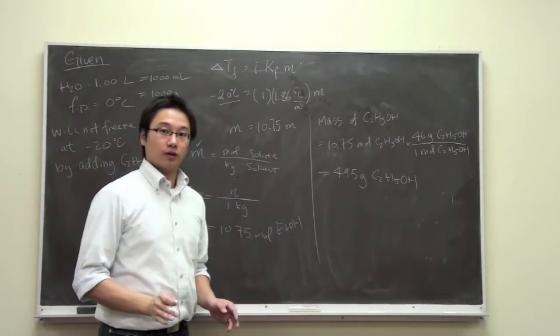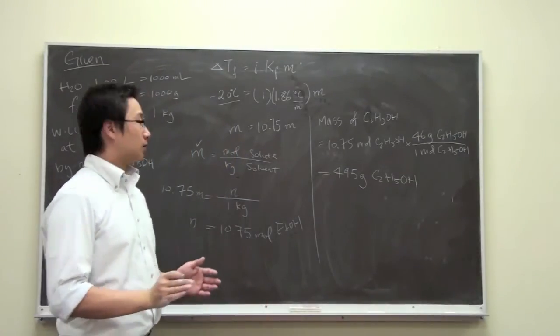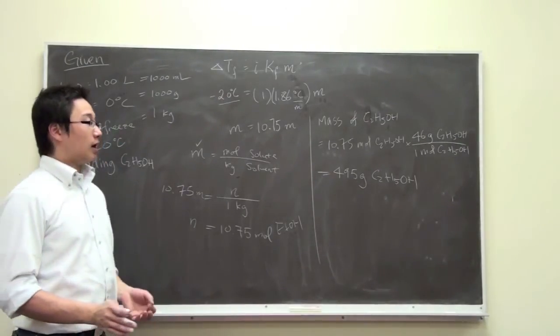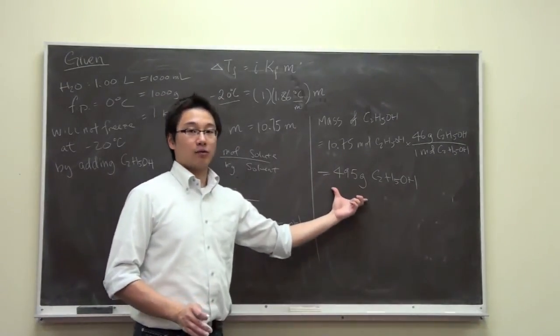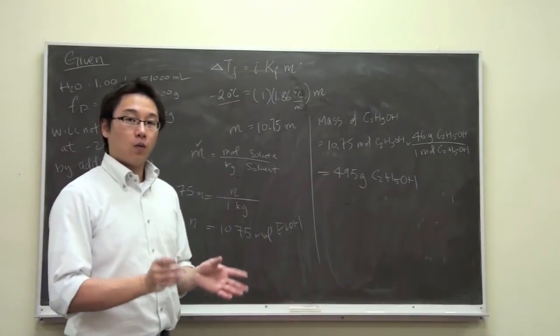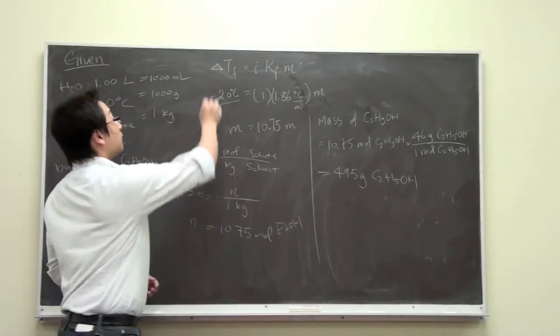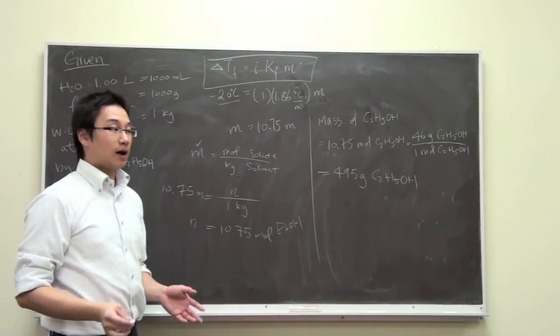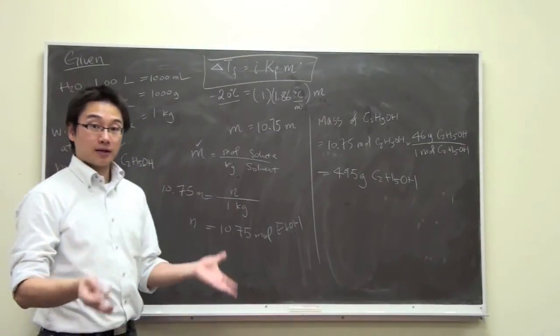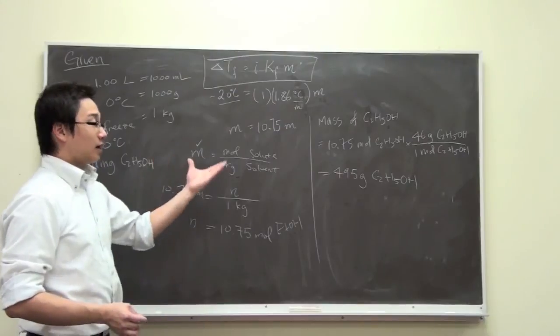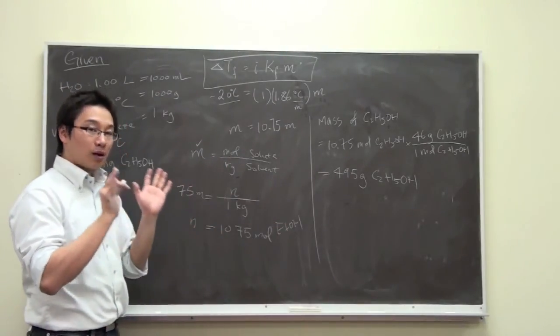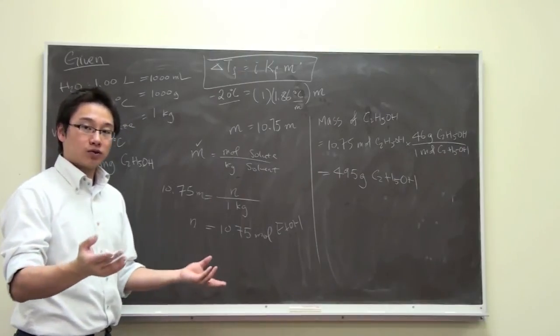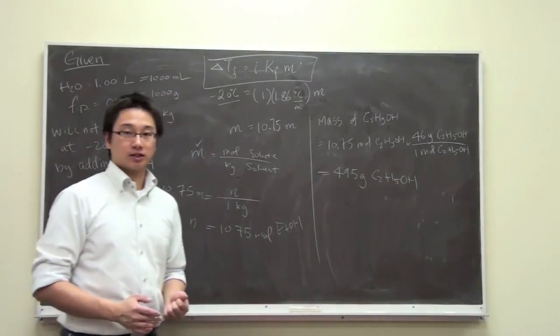To make sure that the solution will not freeze at negative 20 degrees Celsius. We would need at least this amount. So this is how we make use of this equation to find out the mass. It is a step by step procedure. You will not get the answer right away. So make sure you are able to relate different quantities. The moles, the molality, and eventually the mass.